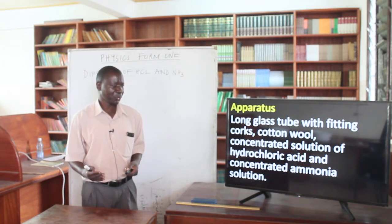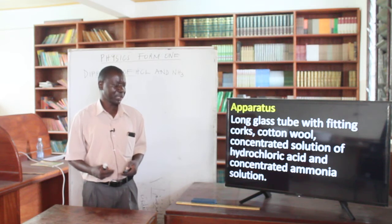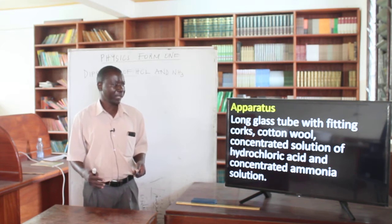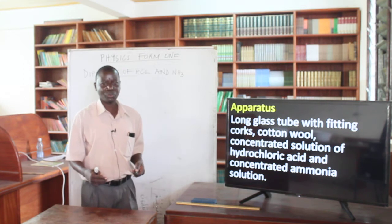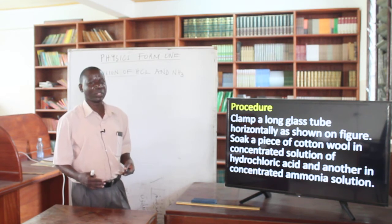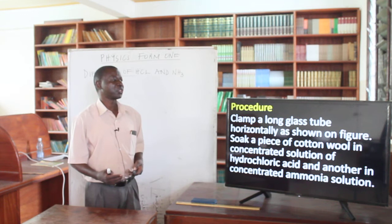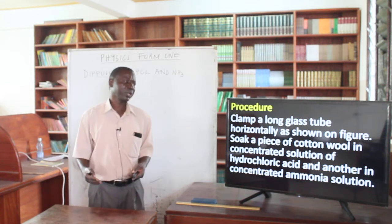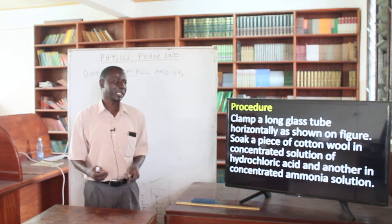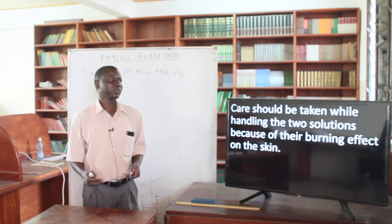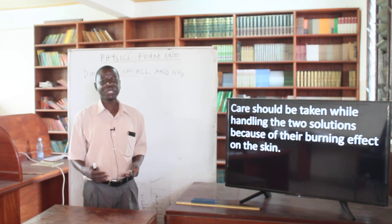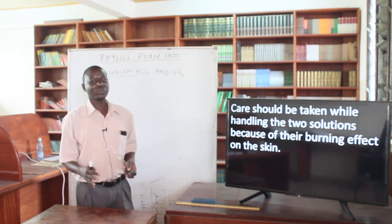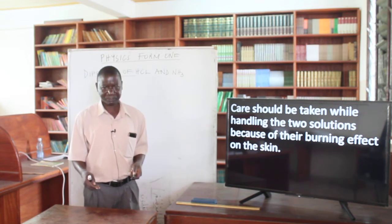They are very dangerous solutions, because concentrated hydrochloric acid is a very strong acid and ammonia is a very strong base. Both of them are very dangerous to our skin. The procedure is that we normally clamp the long glass tube horizontally, then soak one piece of cotton wool in concentrated hydrochloric acid and the other in concentrated ammonia solution. Care should be taken while handling the two solutions because of their burning effect on the skin. You should be very careful when doing this demonstration.